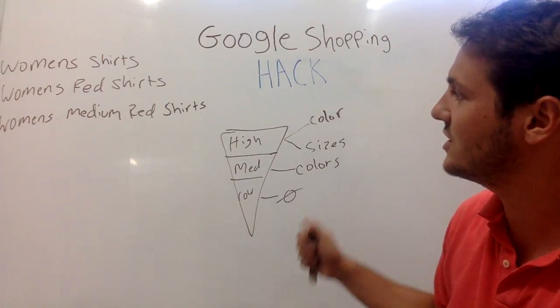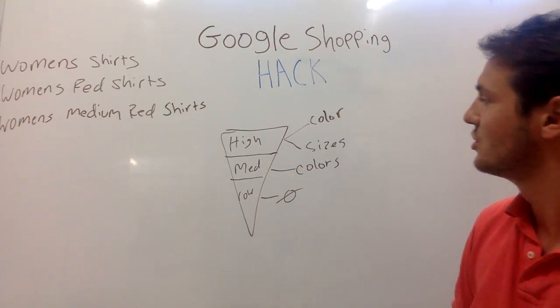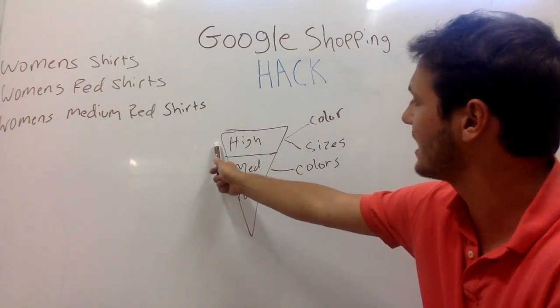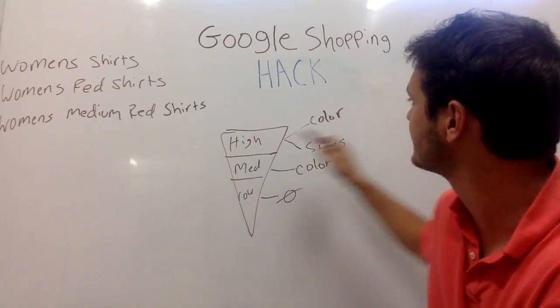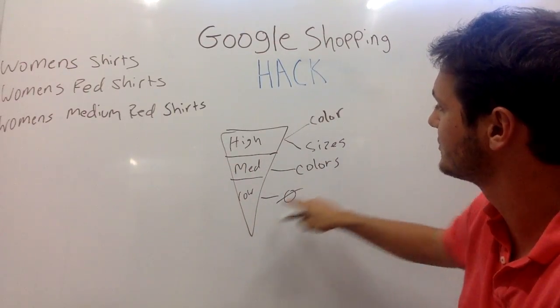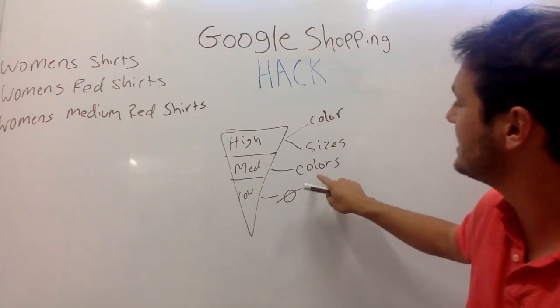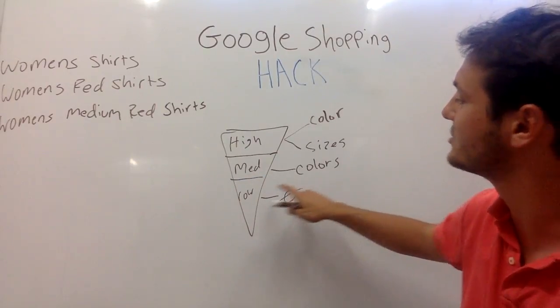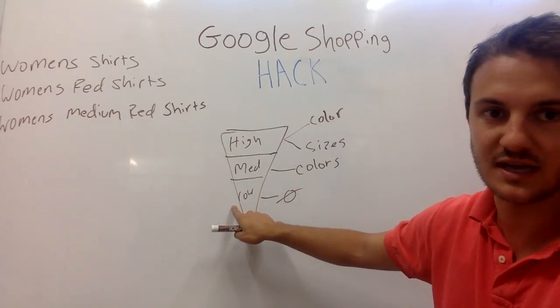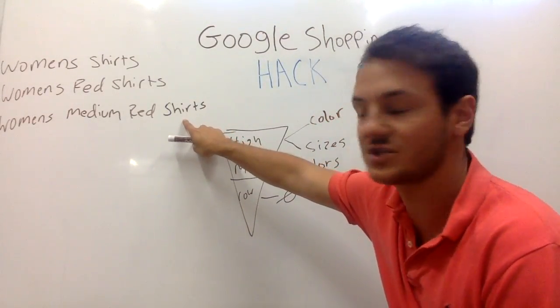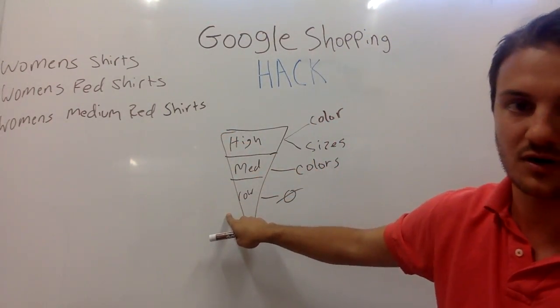Now the reason for this is when someone types in women's medium red shirts, Google will try to match it with the high priority campaign but it won't because it's being blocked by these two negative keywords. It will then get blocked by the medium priority campaign because of the colors but it will be able to go to the low priority campaign. So you'll be able to funnel this very long tail search down to the low priority.